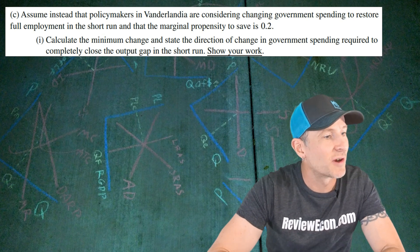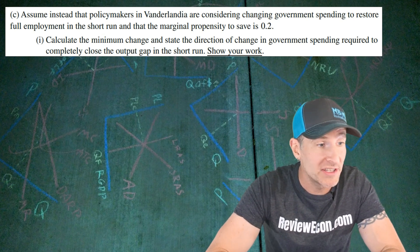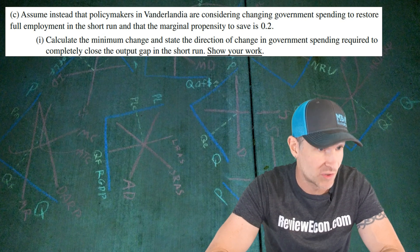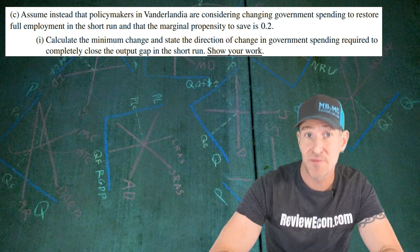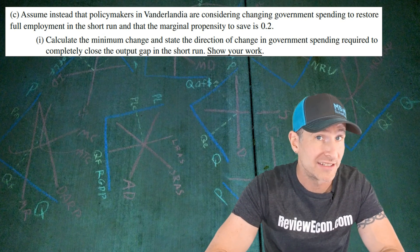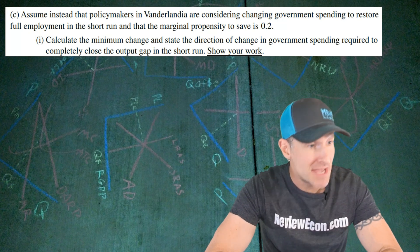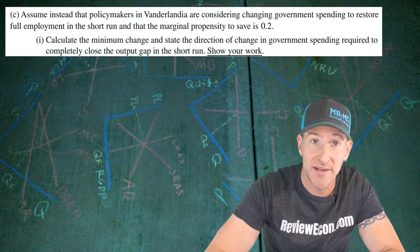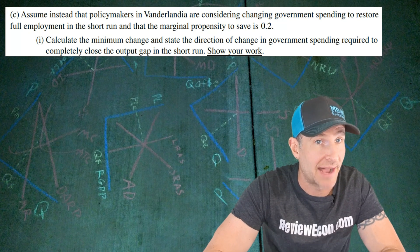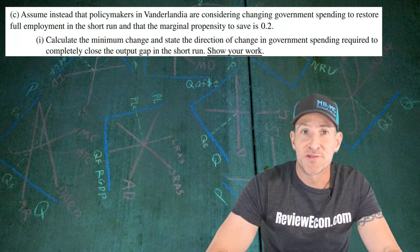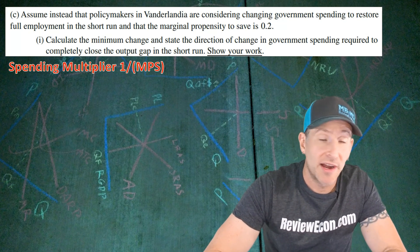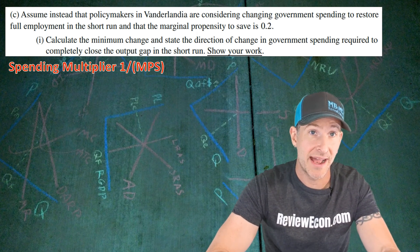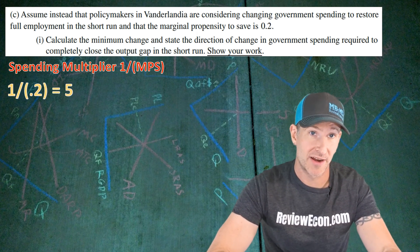Now for part C, we assume that policymakers in Vanderlandia consider changing government spending to restore full employment output. We have a marginal propensity to save of 0.2. We need to calculate the minimum amount of spending needed and the direction of that change required to completely close the output gap, and we have to show our work. The spending multiplier is 1 divided by the MPS, and when we plug in the numbers, that gives us a spending multiplier of 5.